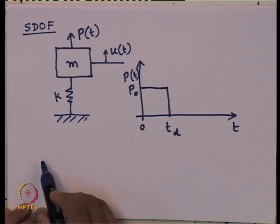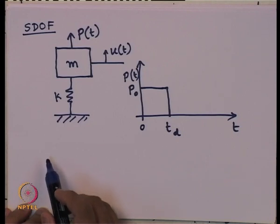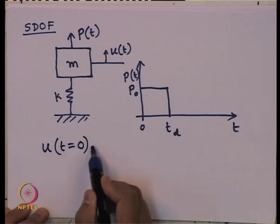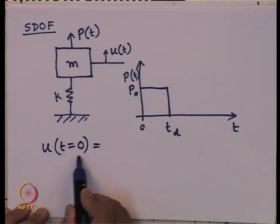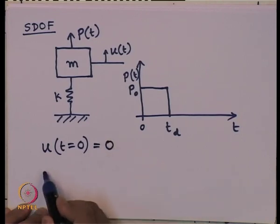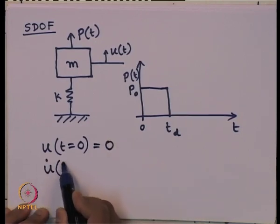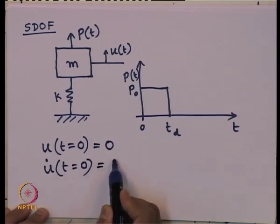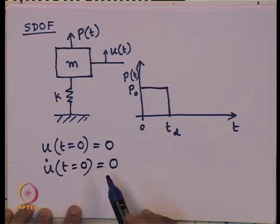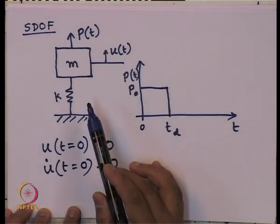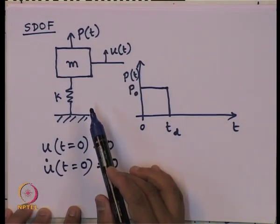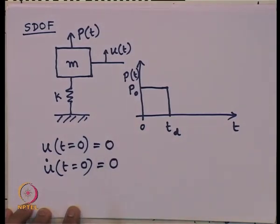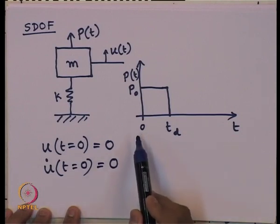For the solution, we need the initial conditions. Let us say displacement u at t = 0 is zero, and velocity u-dot at t = 0 is also zero. That is, the system starts from an absolutely stationary condition with zero displacement and zero velocity at the initial time.